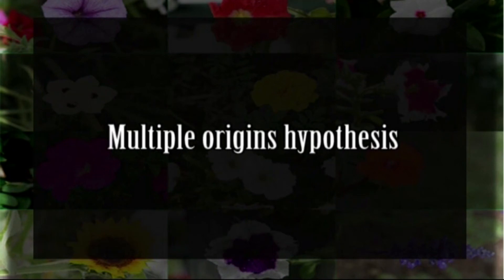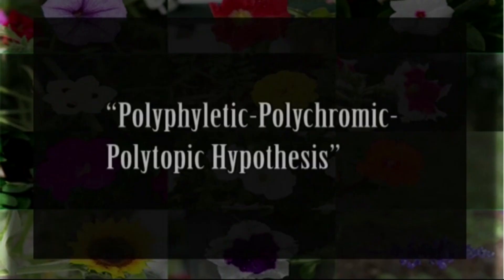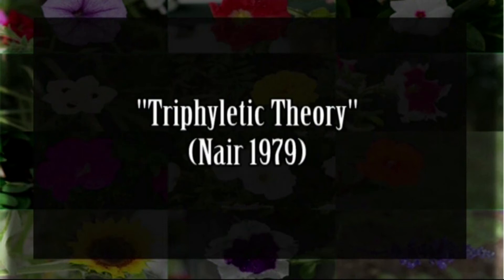According to the Multiple Origin Hypothesis, the flowering plants evolved from multiple unrelated seed plant lineages. The polyphyletic, polychromic, polytropic hypothesis and Nair's triphyletic theory are best placed within this hypothesis.